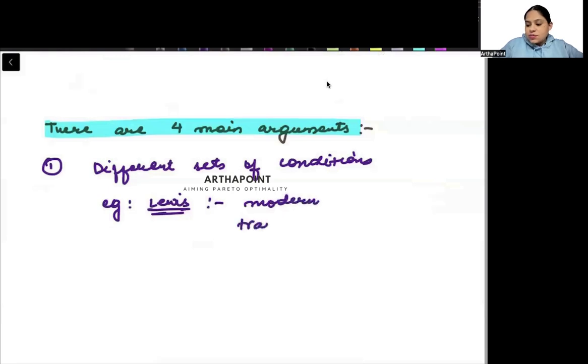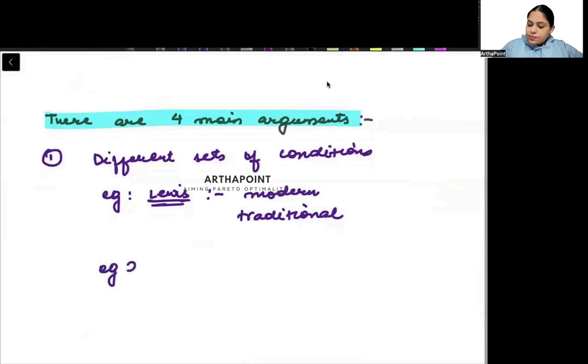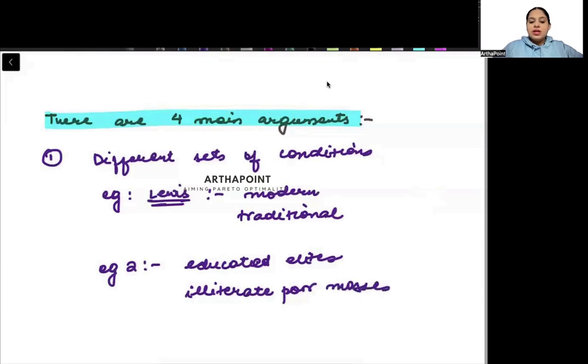Modern sector is giving more wages, it is advanced. Traditional sector is backward, rural, giving less wages, has illiterate poor people. Similarly, example two: the existence of educated elites with illiterate poor masses. That is also another reason.